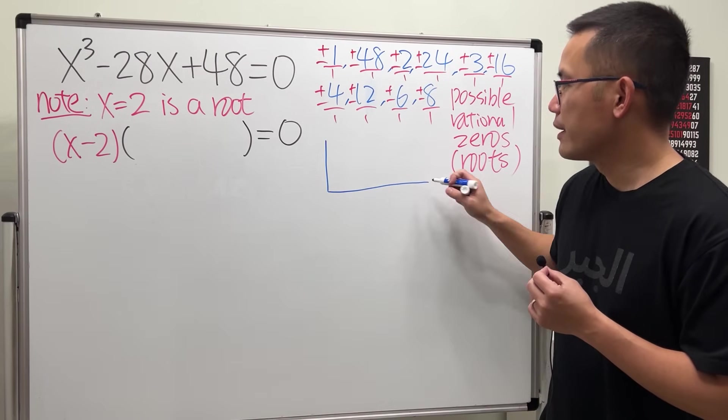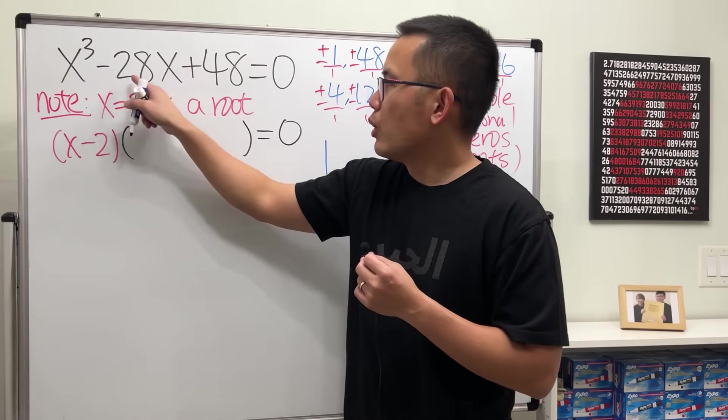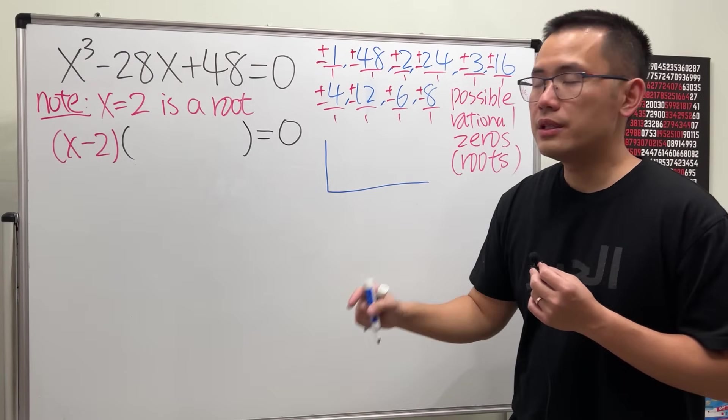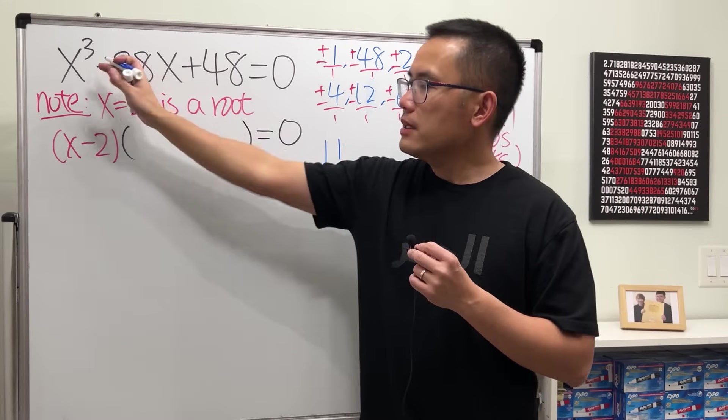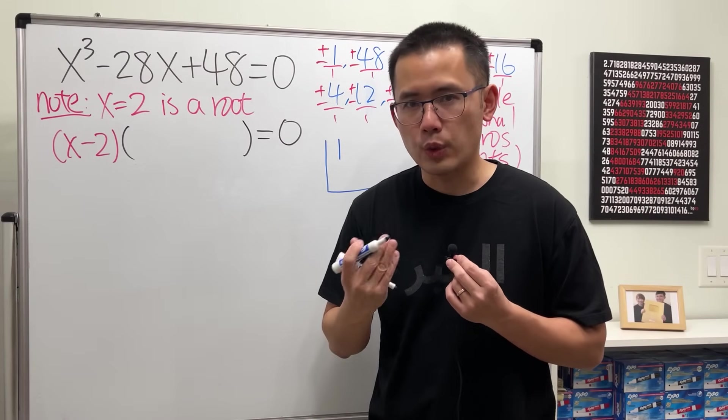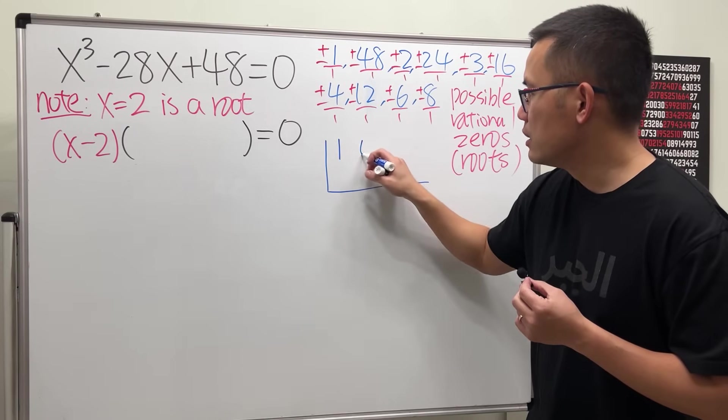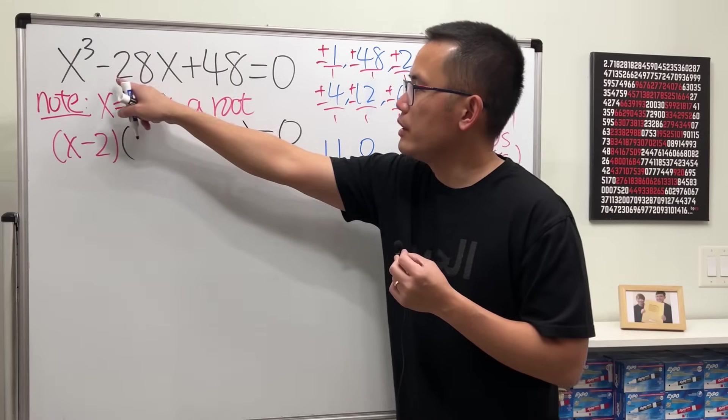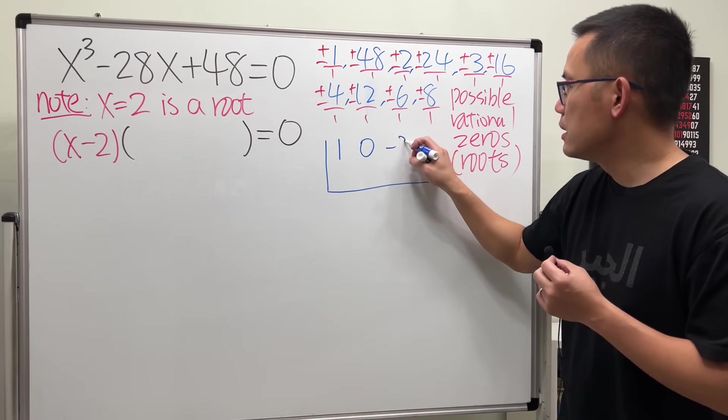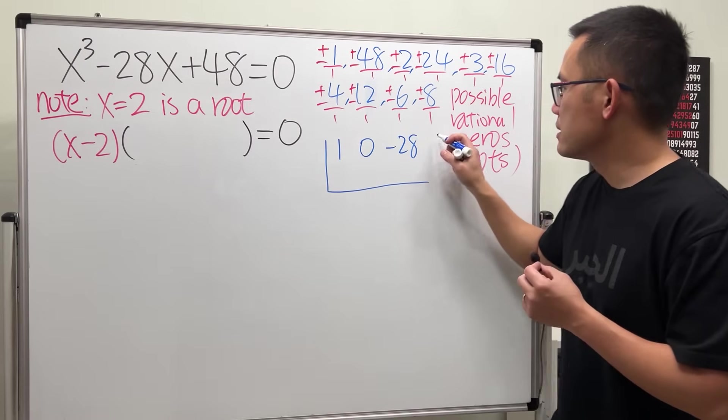But if you just have x minus the number or x plus the number, synthetic division is going to be easier. This is how it works. Have a look, I'll show you guys this right here. Write down the coefficients from the equation starting with one, x cubed, so it's one. But next we don't have any x squared term, right? So make sure you write down a zero. It's like a placeholder. You have to write down the zero. Continue with the negative 28, lastly we have the positive 48.